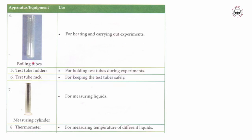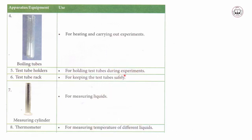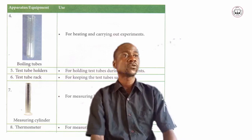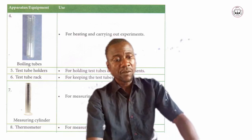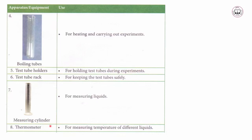Here is a diagram of the boiling tube. Number four, test tube holders — for holding test tubes during experiments, since test tubes cannot be properly placed on a flat surface on their own. Number five, the test tube rack — for keeping test tubes safely. After an experiment, test tubes must be stored properly in the test tube rack.